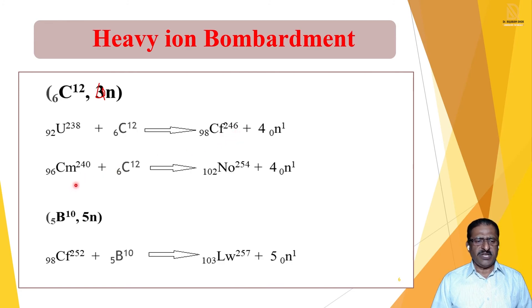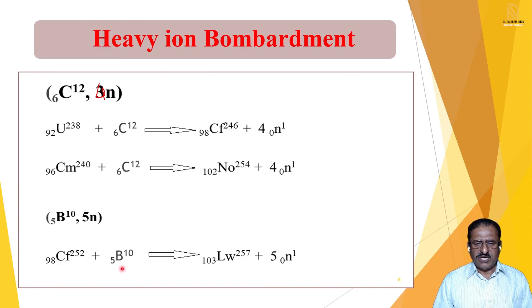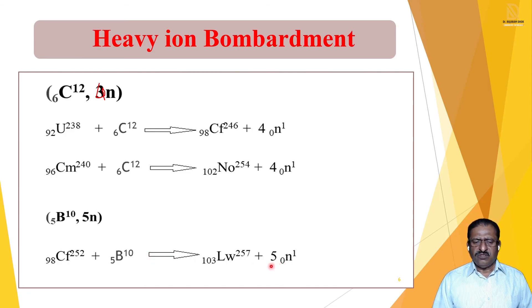Another example uses boron-5-10 with 5N. Californium-98-252 is bombarded with boron. Atomic number increases by 5: 98 + 5 = 103 (Lawrencium). Mass increases by 10, but 5 neutrons are eliminated, so net increase is 5: 252 + 5 = 257. We get Lawrencium-103-257.